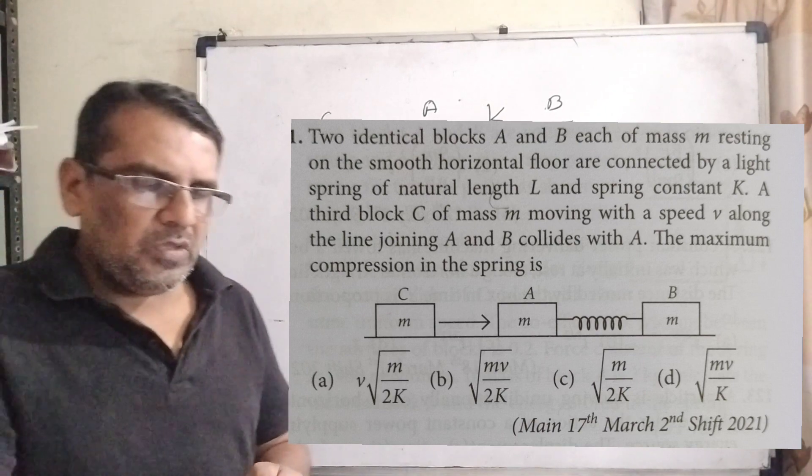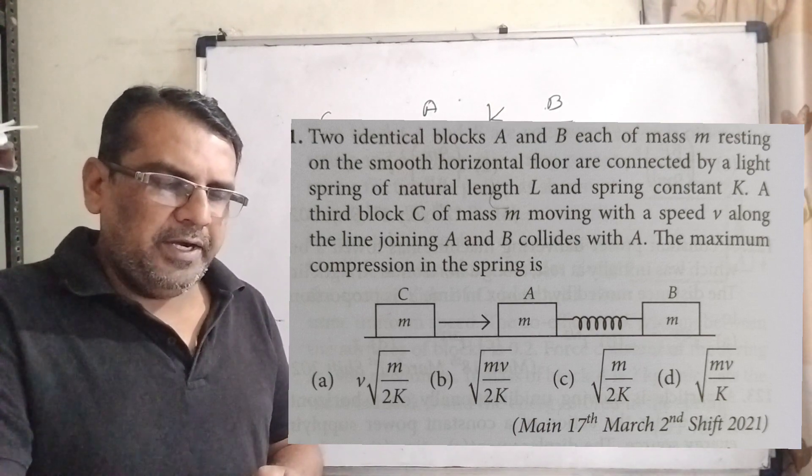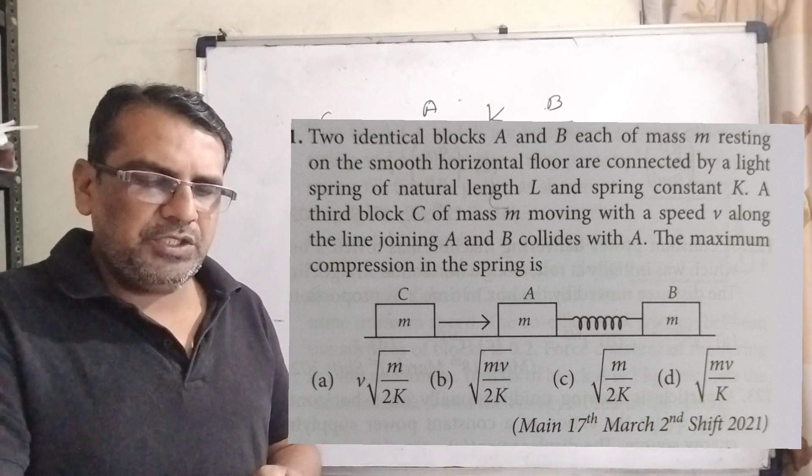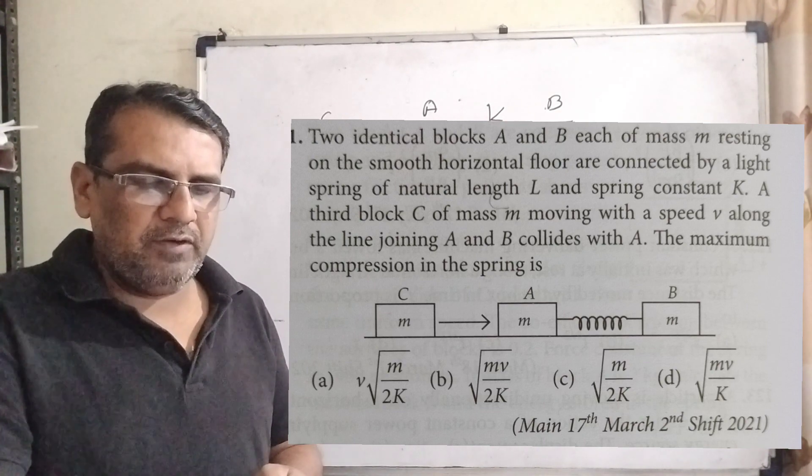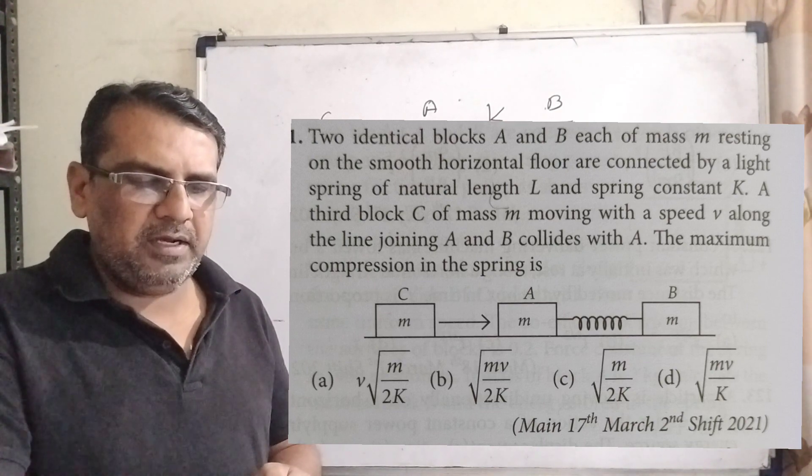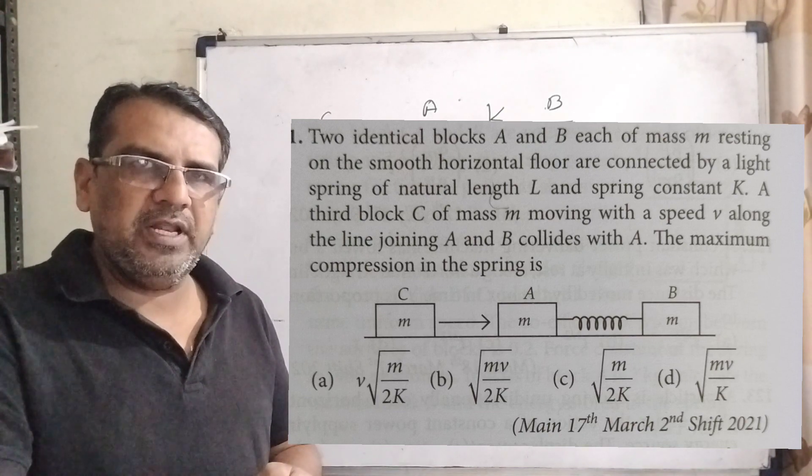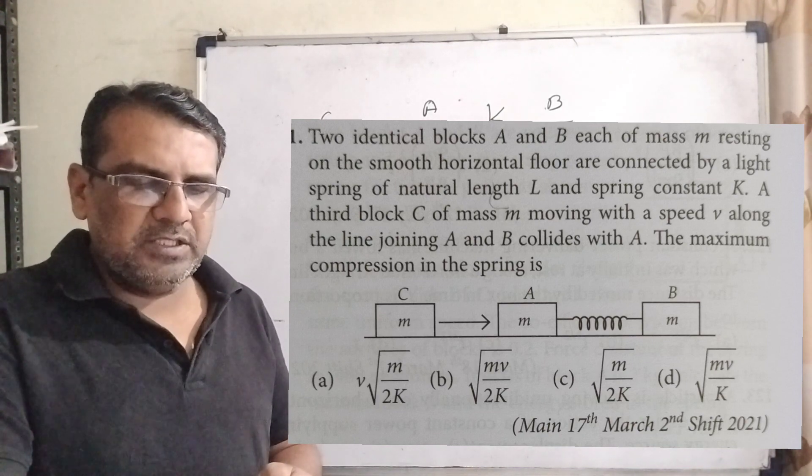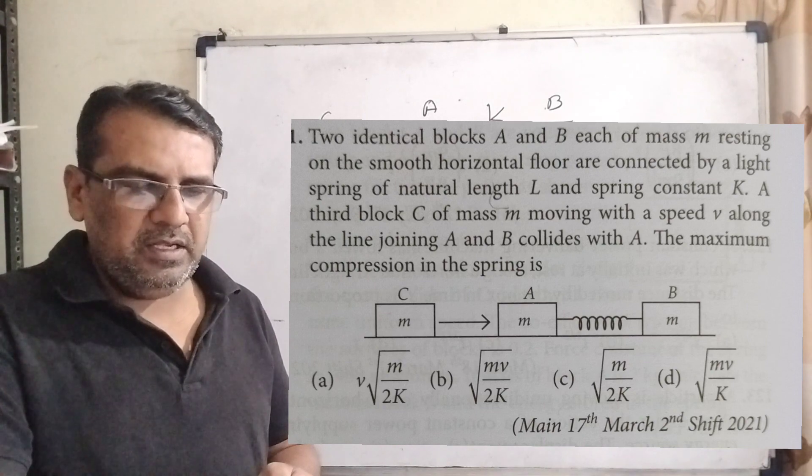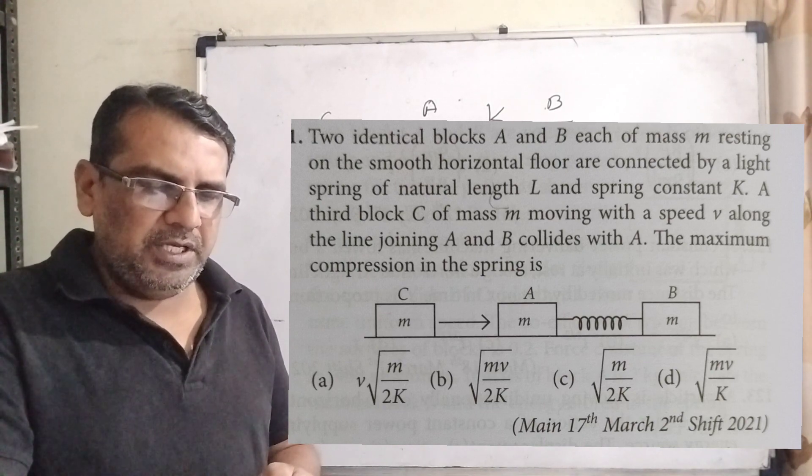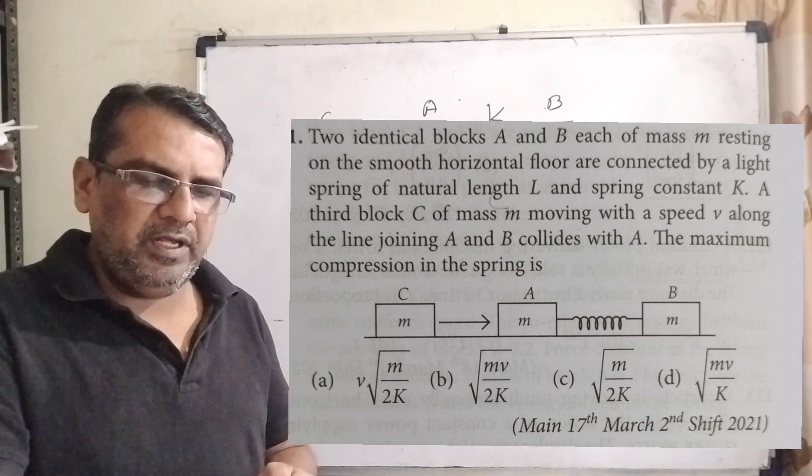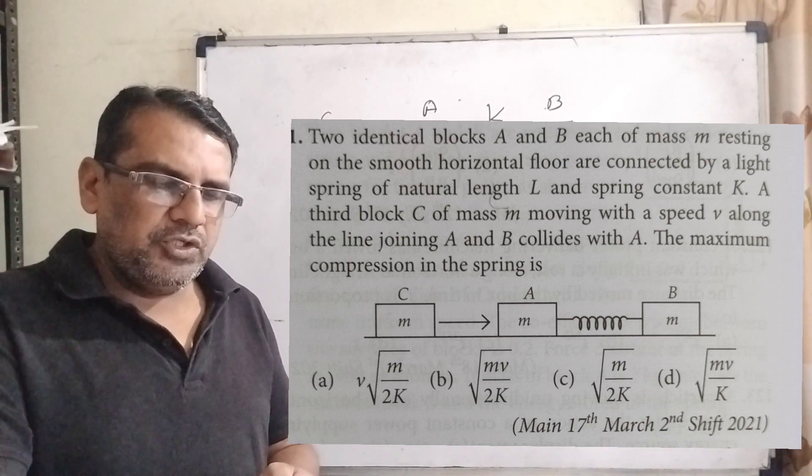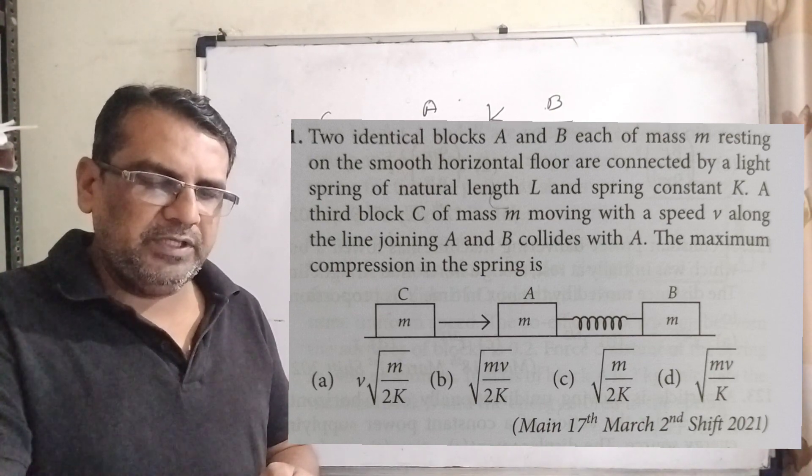Here is the question. Two identical blocks A and B, each of mass m, resting on a smooth horizontal floor, are connected by a light spring of natural length L and spring constant K. A third block C of mass m, moving with a speed v along the line joining A and B, collides with A.